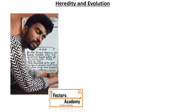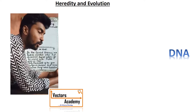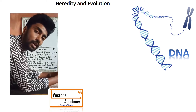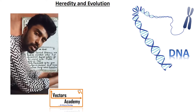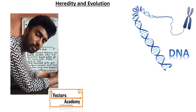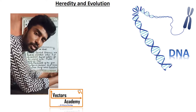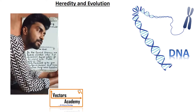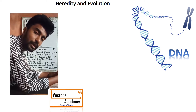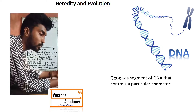DNA is a genetic material which is generally present in the nucleus of the cell. We say that he looks like his father or she looks like her mother. Certain characters are generally transmitted from one generation to another, and that is possible due to the presence of chromosomes on the DNA. Gene is a segment of DNA that controls a particular character.